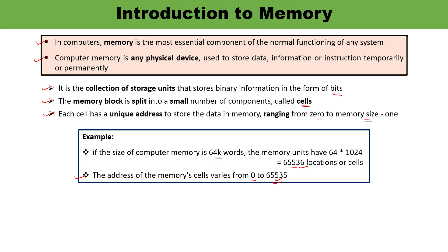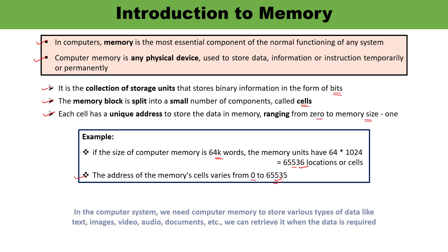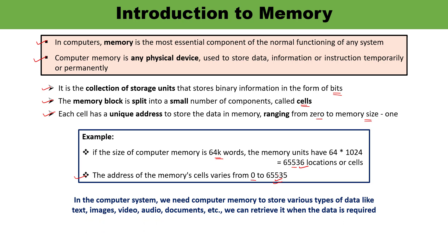In computer systems, we need memory to store various types of information, and whenever required we can retrieve that information. The data stored in memory may be in the form of audio, video, documents, text, or images. So data can be stored in various forms.